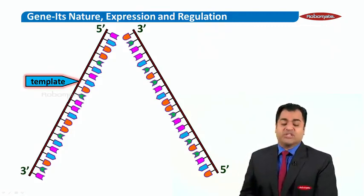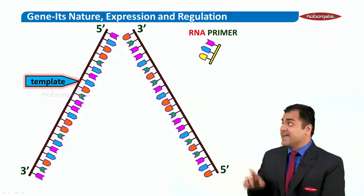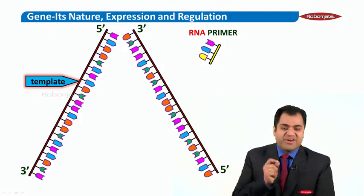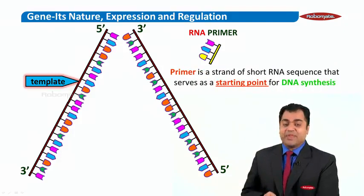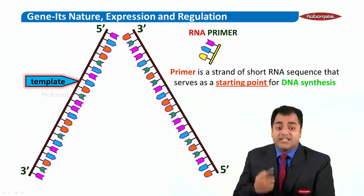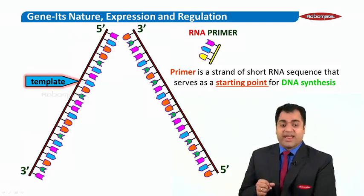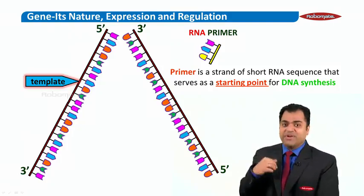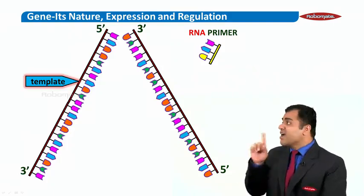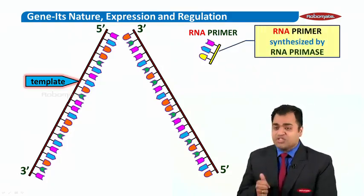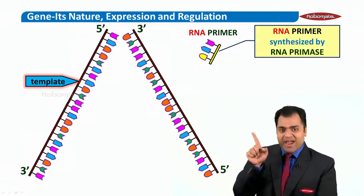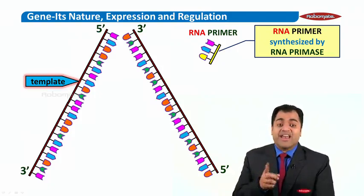Now, for the purpose of replication, we require a molecule called RNA primer. Look at the name. RNA primer. What is a primer? A primer is a strand of short RNA sequence that serves as a starting point for DNA synthesis. You have an RNA, but it synthesizes new molecule of DNA. This RNA primer is synthesized by a special enzyme not shown here called RNA primase. Please remember RNA primer is synthesized by RNA primase enzyme.